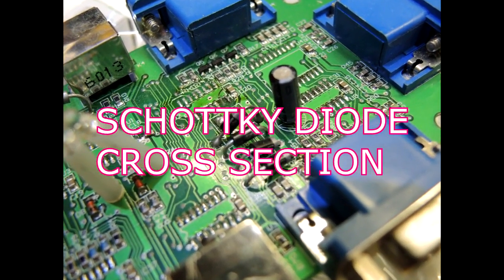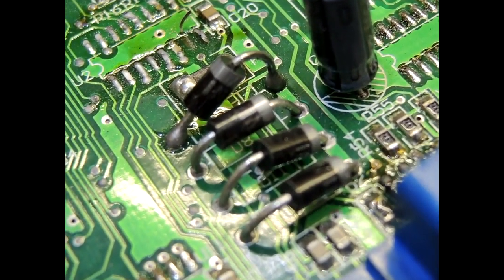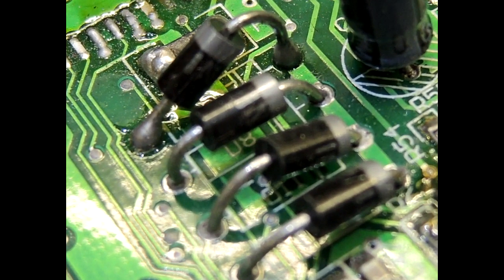Cross-sectioning time. We're looking down upon an old circuit board here and if I just zoom in I can see four diodes. They look like they're probably power diodes of some sort. Let's take one off the board and cross-section it to see how it was assembled.